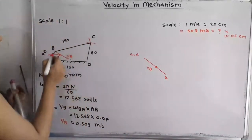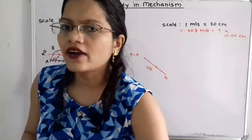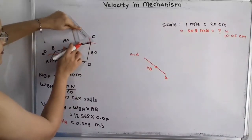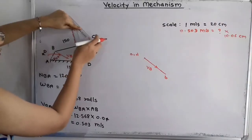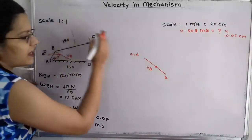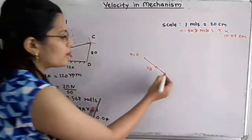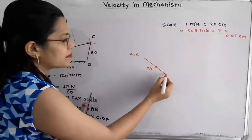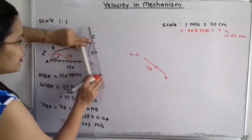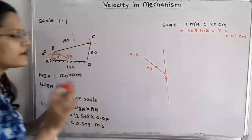Now we move to the next step. For point B, link BC is connected. To show the velocity for link BC, we know velocity is always perpendicular to the link. I align one edge of the protractor to link BC and draw a construction line perpendicular to BC. Since we don't know in which direction — upward or downward from B — I draw the perpendicular line through point B in both directions, because currently we don't know the direction.